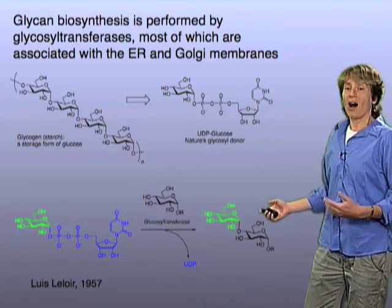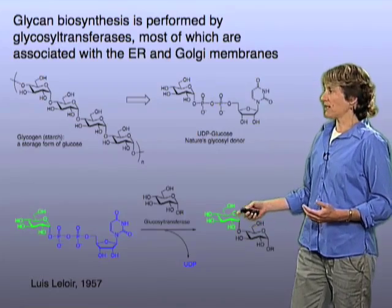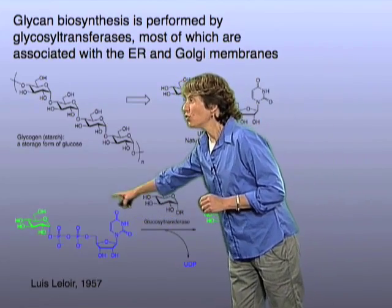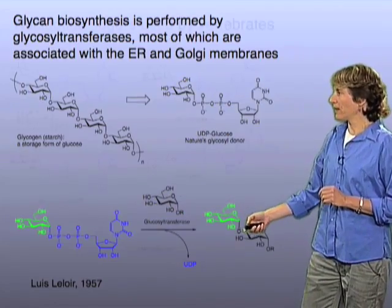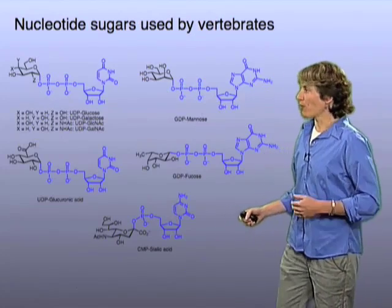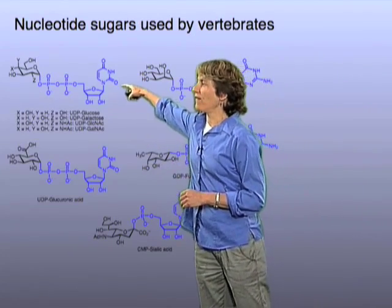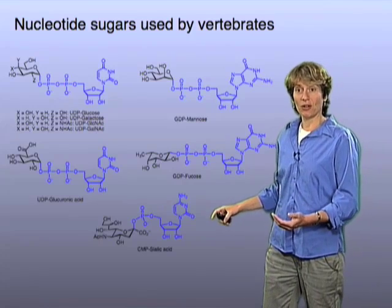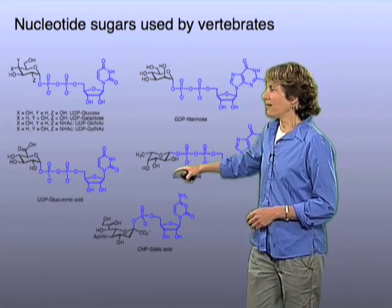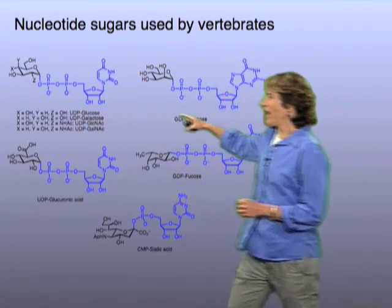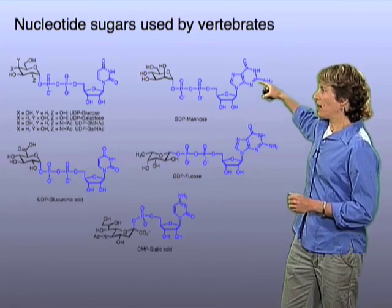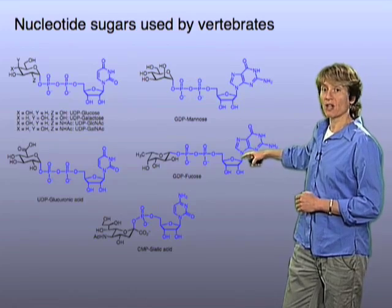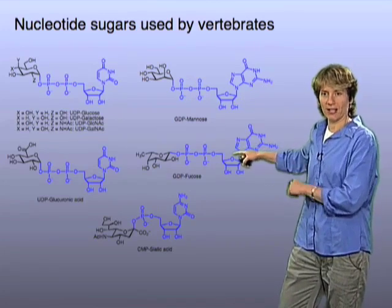It turns out that most of the glycosyl transferases use substrates similar to this nucleoside diphosphosugar. In vertebrate biology, many sugars are found in UDP form — not just glucose, but also galactose, acetylgalactosamine, and acetylglucosamine. Whereas some sugars are found linked in the form of a GDP nucleoside — for example, GDP-mannose and GDP-fucose. These are the substrates for their respective glycosyl transferases.